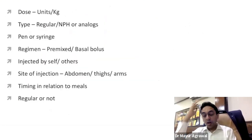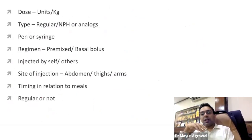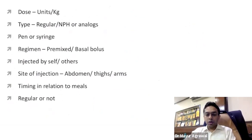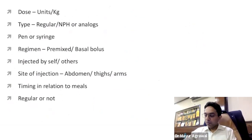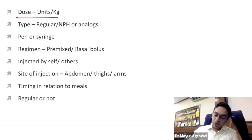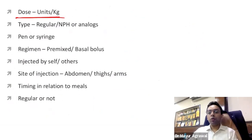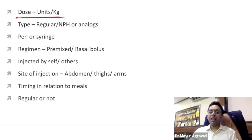When a patient is already on insulin or when initiating insulin, there are important things to discuss. You need to know the total amount of insulin the patient is taking and the dose per kg body weight. Basal insulin should not exceed 0.5 units per kg — beyond that is over-basalization, and you need to add a bolus to the basal regimen.